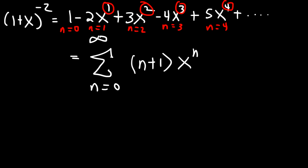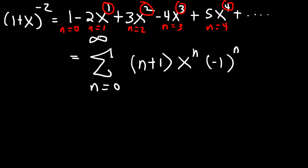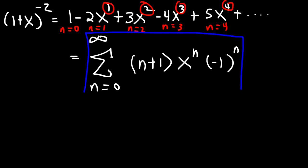The last thing to deal with are the alternating signs: positive, negative, positive, negative. This is handled by negative 1 raised to the n power. When n is 0, negative 1 to the 0 is positive 1. When n is 1, negative 1 to the first gives us the negative sign in front of 2x. So this power series corresponds to 1 plus x raised to the negative 2, and that's how you use the binomial series to represent a function as a power series.